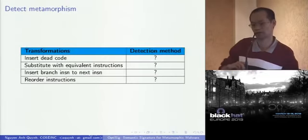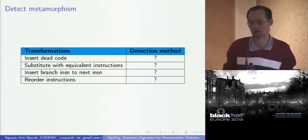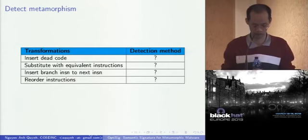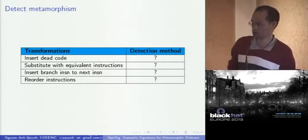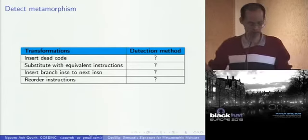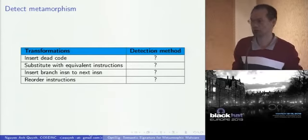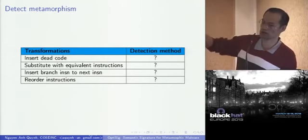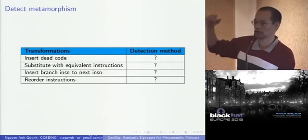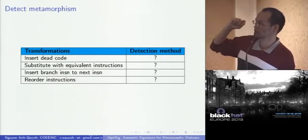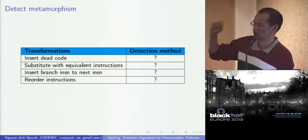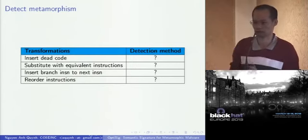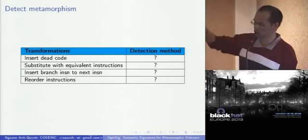Metamorphic malware really introduces a big problem for legacy signature-scanning AV. No AV can currently detect this type of metamorphic malware. So the question is how to detect metamorphic malware. We break down the transformations and try to solve each problem: detect insert dead code, detect substitute equivalent instructions, detect insert branch to next instruction, and detect reorder instruction. If we can solve all of them, we can solve the problem.